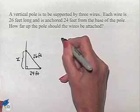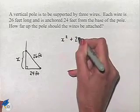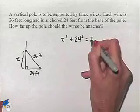We're going to set up the equation, X squared plus 24 squared equals 26 squared.